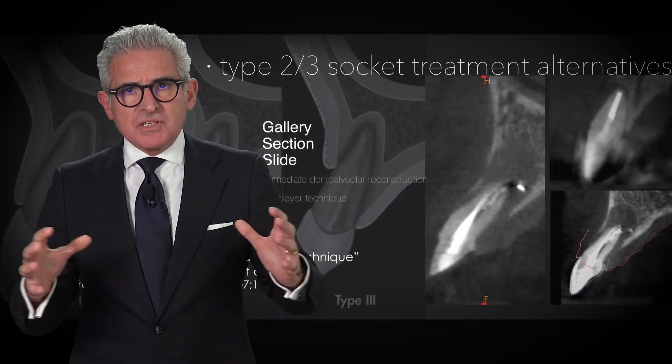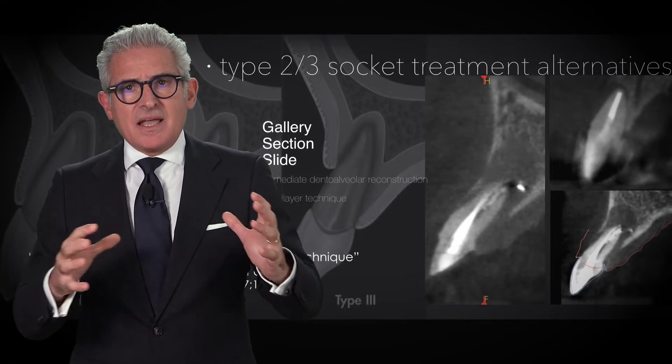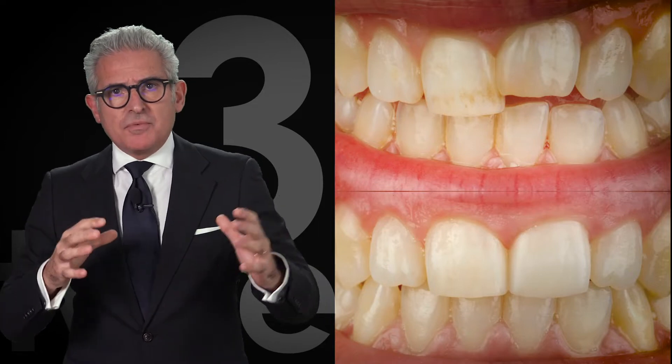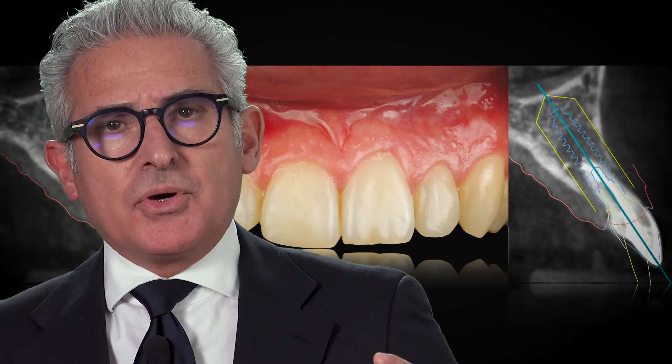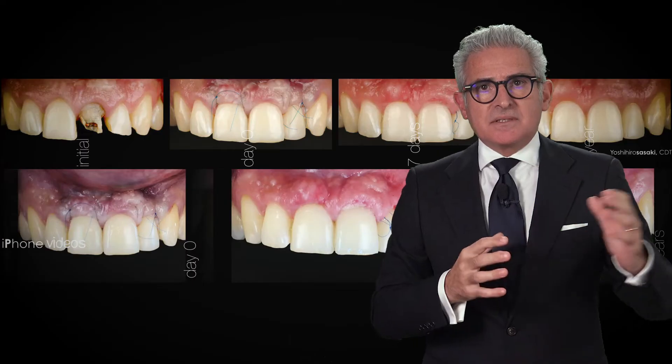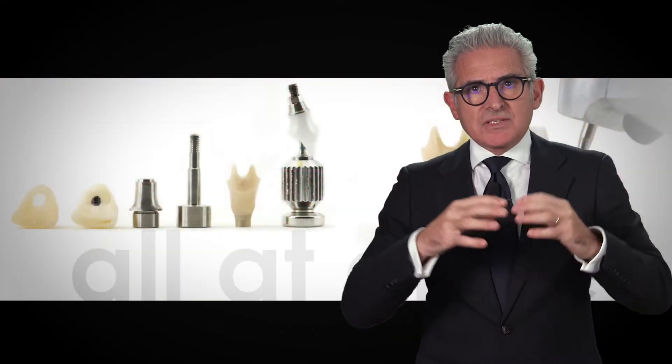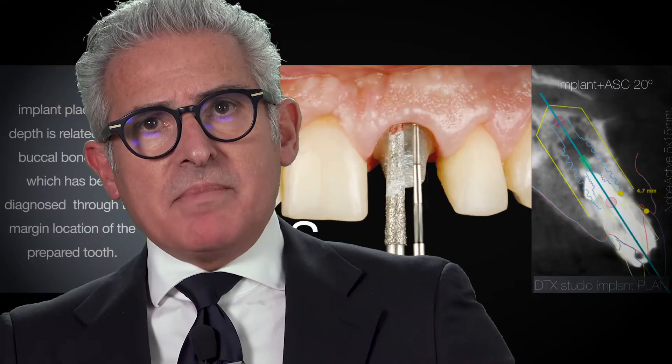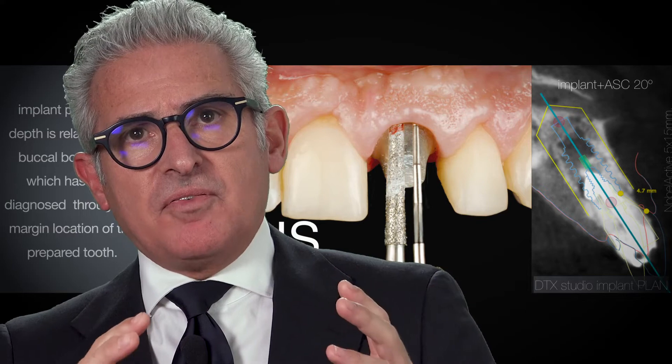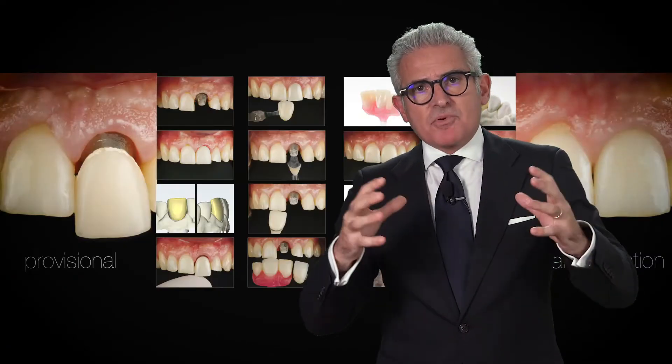We'll discuss the different classifications and how you can handle difficult cases of type 2 and type 3 depending upon your knowledge, your dexterity, and your familiarity with the process and the surgery. We'll also discuss adjacent implant placement, risk assessment, alternate treatments, and as a wrap-up we'll have the all-at-once concept — the evolution of creating and providing the final crown and final abutment the same day of the implant placement.